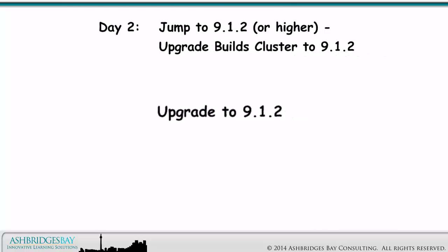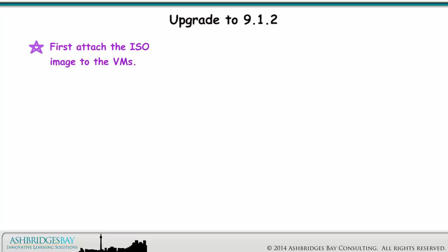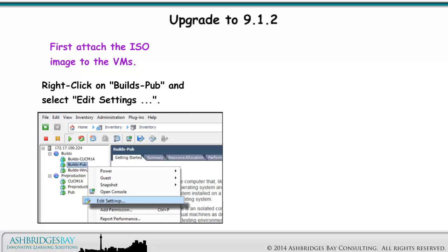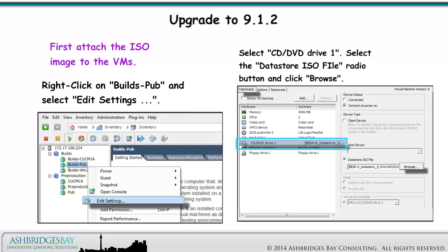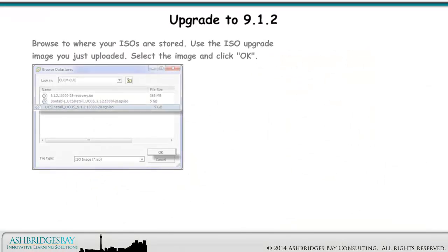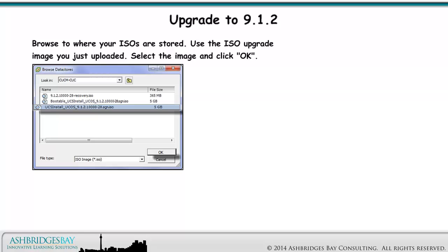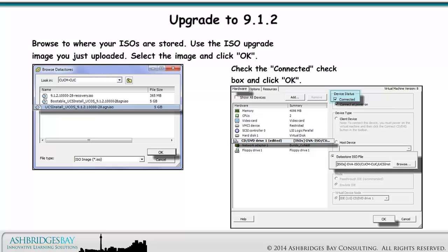Now we upgrade to 9.1.2. First, attach the ISO image to the VMs. Right-click on Builds Pub and select Edit Settings. Select CD DVD Drive 1. Select the Datastore ISO file radio button and click Browse. Browse to where your ISOs are stored and use the ISO upgrade image you just uploaded. Select the image and click OK. Check the Connected check box and click OK again. Do this for all the VMs in the cluster.